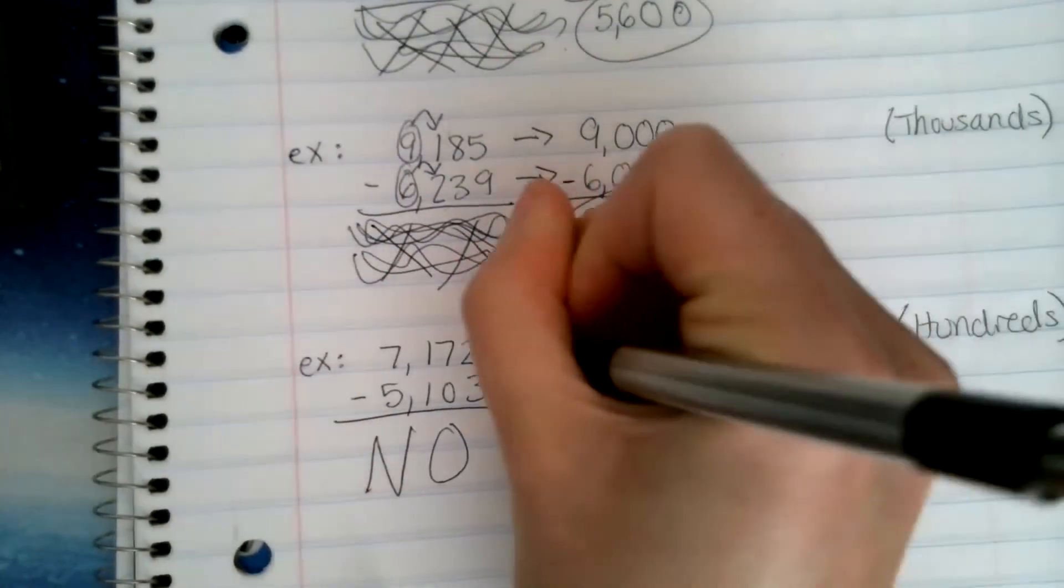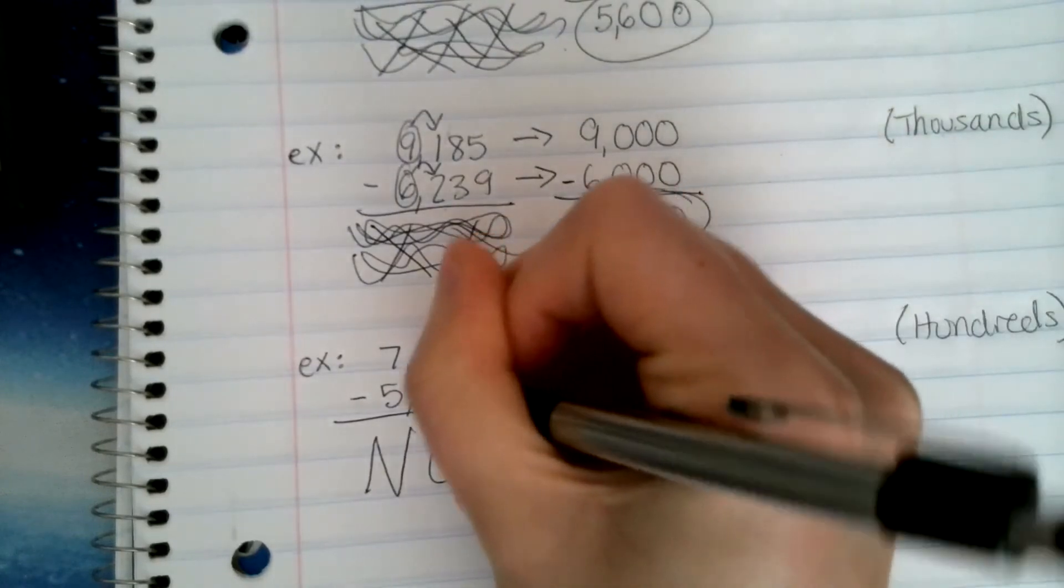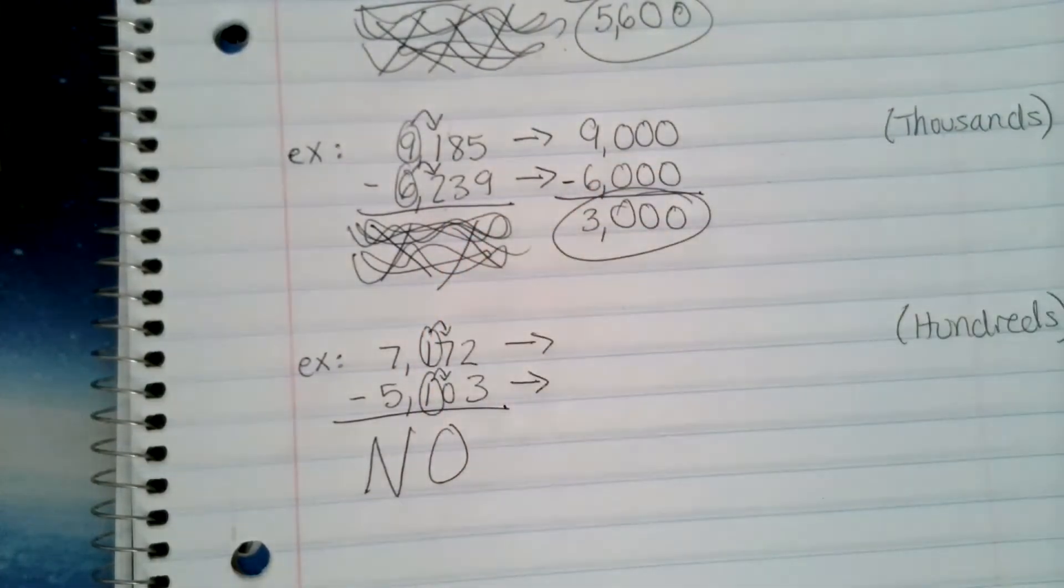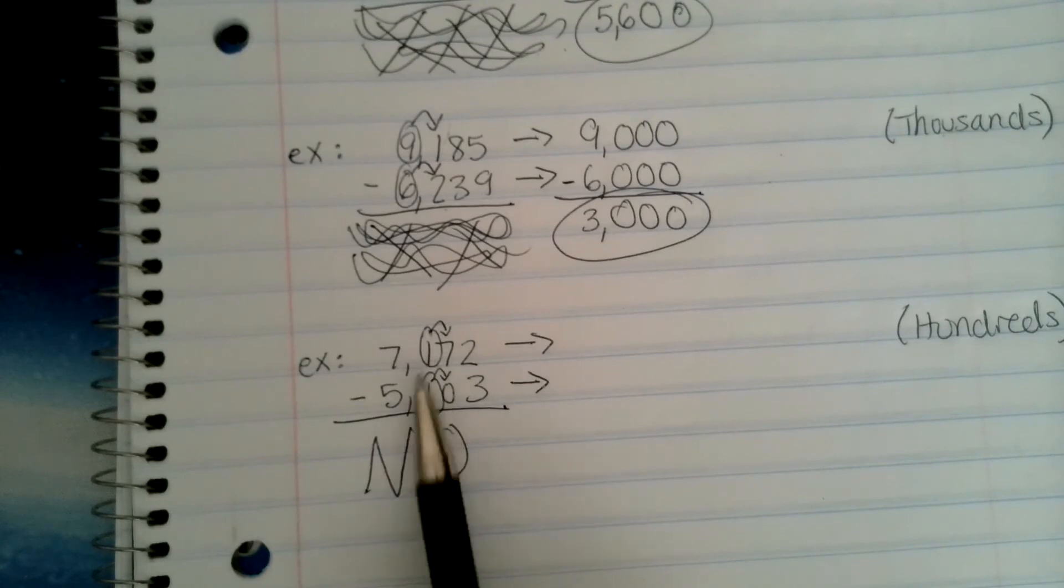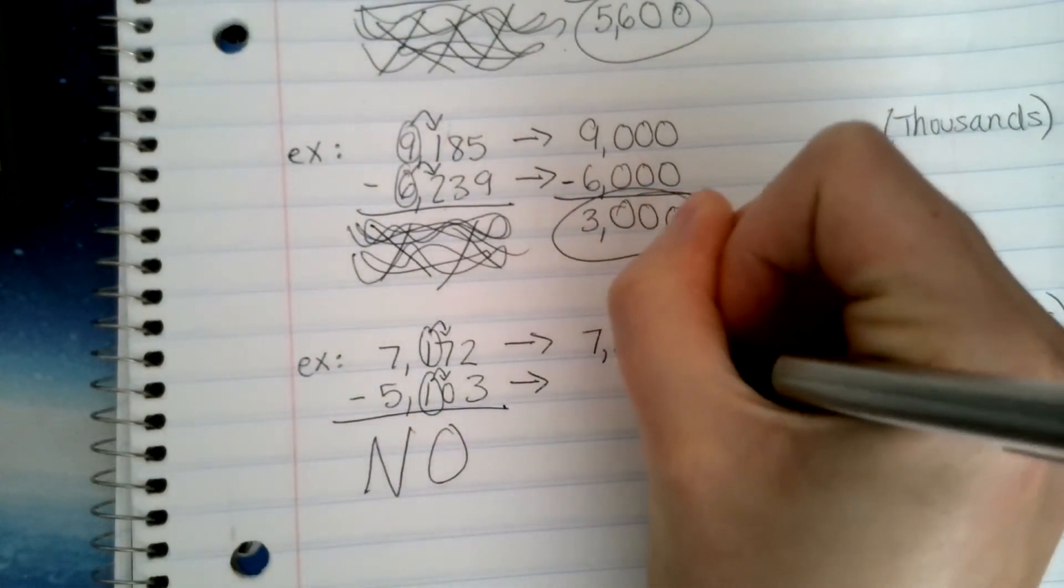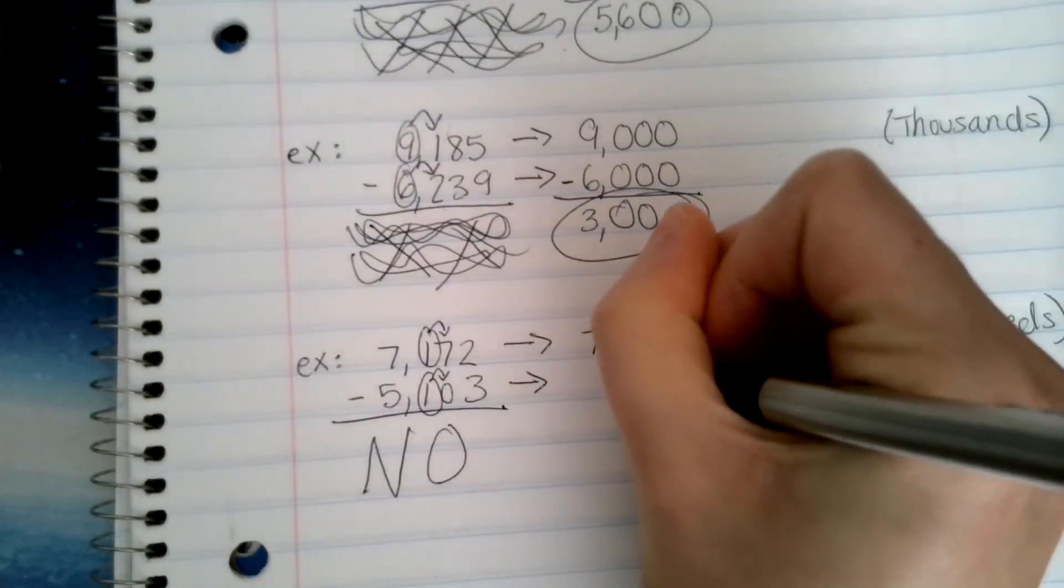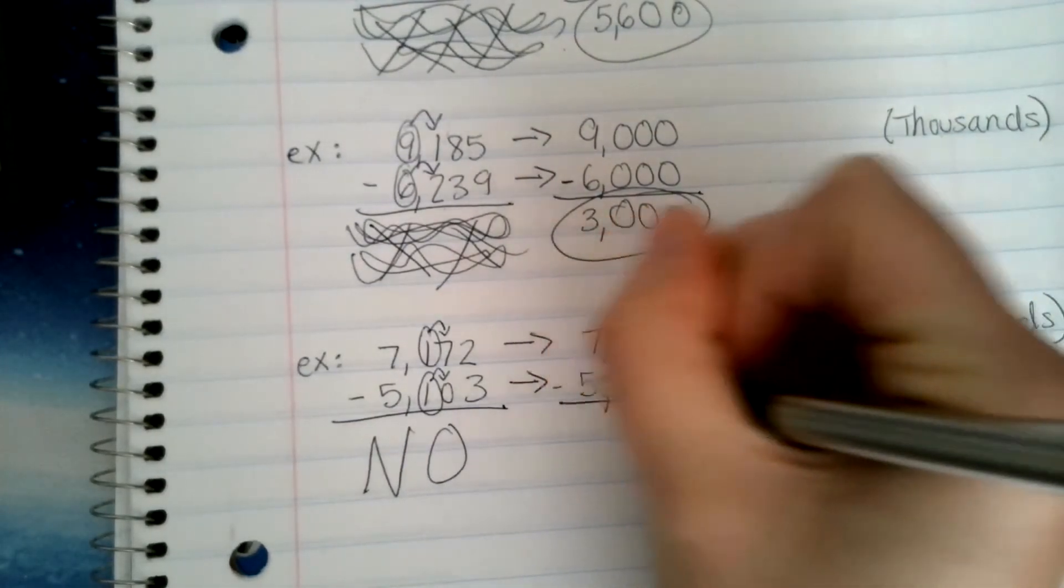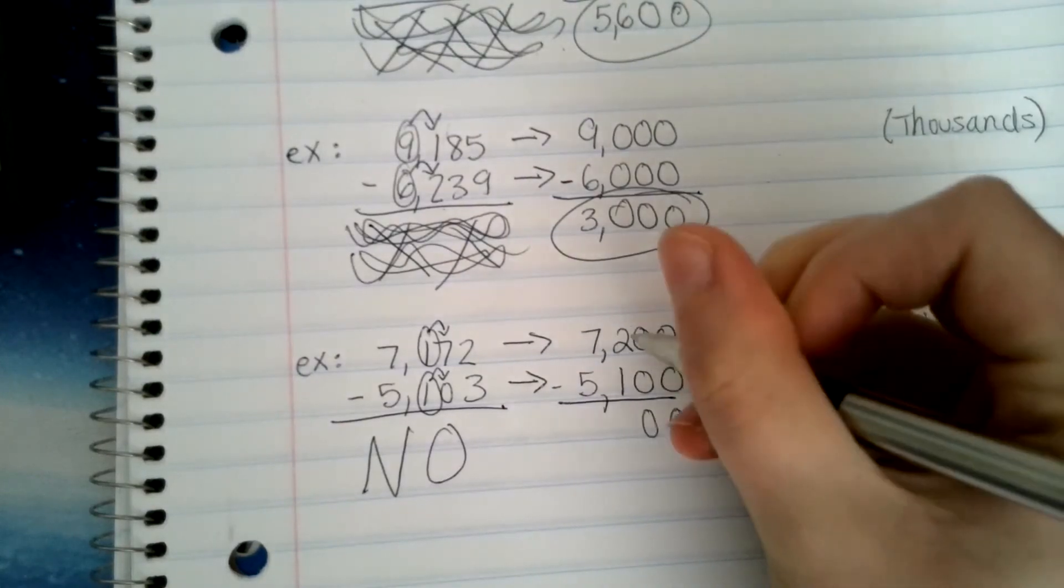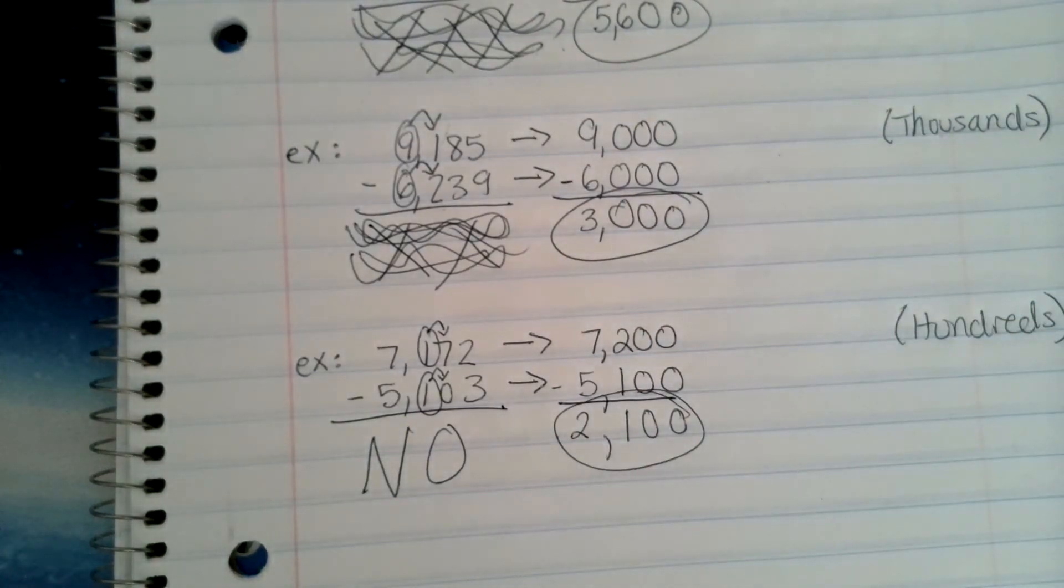Am I finding the actual answer? No. I need to come over here and round. If I'm rounding to the hundred spot, go ahead and circle your hundred spots and draw an arrow to next door. When I subtract, I'm going to have 0, 0, 2 minus 1 is 1, 5 minus 7 is 2, so my answer is 2100.